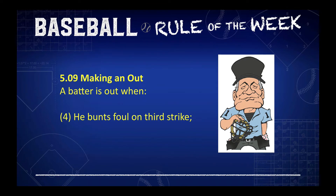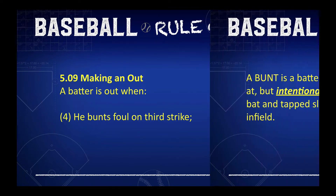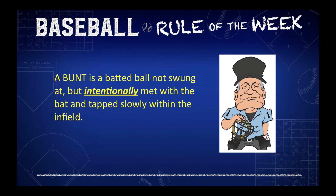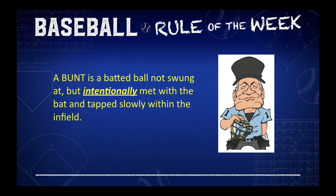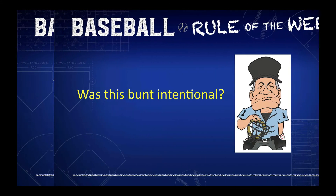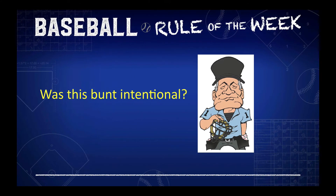In the rulebook under 5.09, Making It Out, a batter is out when he bunts foul on a third strike. But what is a bunt? A bunt is a batted ball not swung at, but intentionally met with the bat and taps slowly within the infield. So the question is, was this bunt intentional?